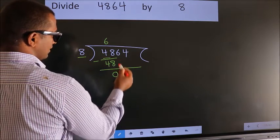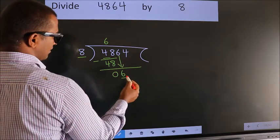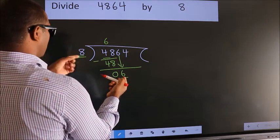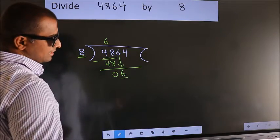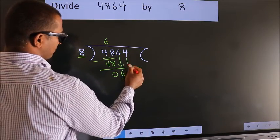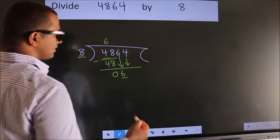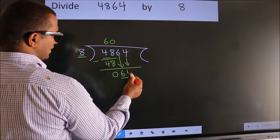After this, bring down the beside number. So 6 down. Here we have 6. Here 8. 6 smaller than 8, so we should bring down the second number. And the rule to bring down second number is put 0 here. Then only we can bring down this number.